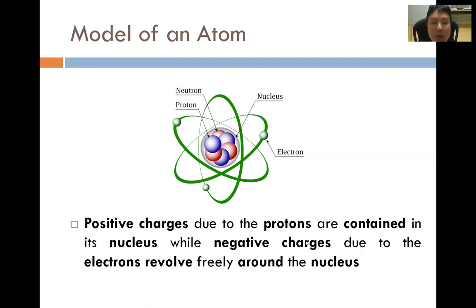On to charges. Since we know that the proton is positively charged while the electrons are negatively charged, positive charges due to the protons are contained in a very small region of space in the nucleus of the atom, while the negative charges due to the electrons revolve freely around the nucleus. This is on the distribution of charges.